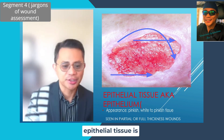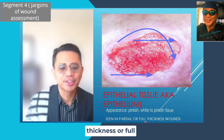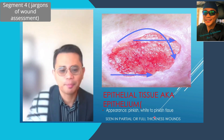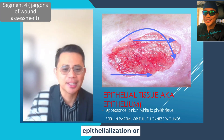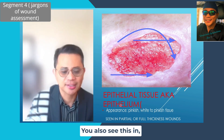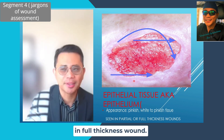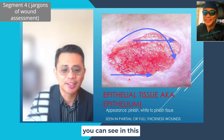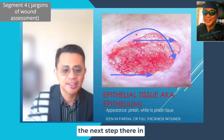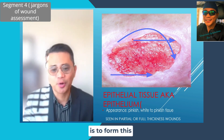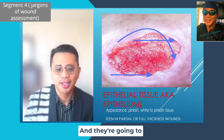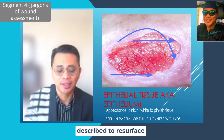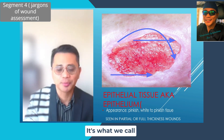Epithelialization, or epithelial tissue, is seen in both partial thickness and full thickness wounds. In a full thickness wound, once the wound bed is filled with granulation tissue, the next step in closing the wound is to form epithelial tissue coming from the edges of the wound — from the intact skin at the wound edges — and they migrate towards the center to resurface or close the wound. This is what we call re-epithelialization.